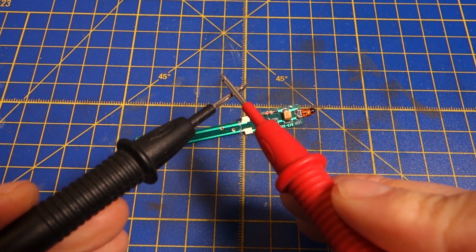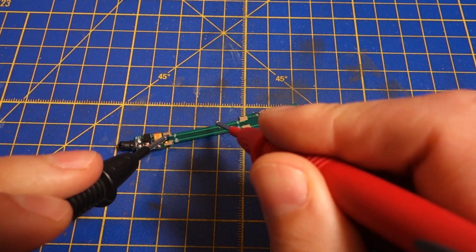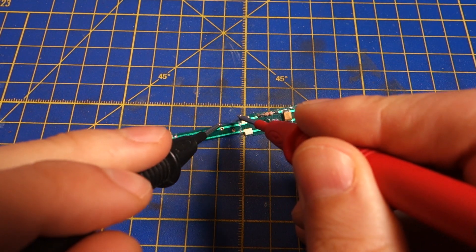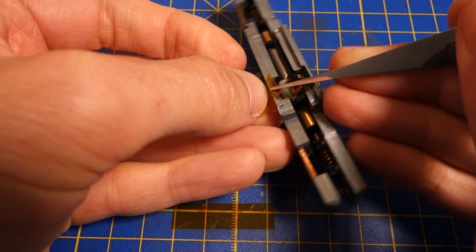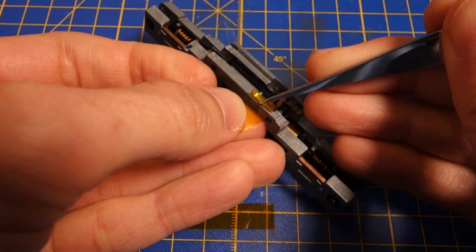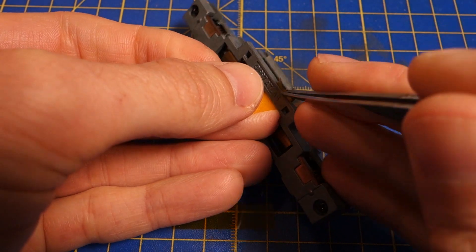To make sure that there are no unwanted connections remaining, I go over the contacts and double check with a digital multimeter. Before putting the board back into the frame, I isolate the frame around the motor contact strips with kapton tape.